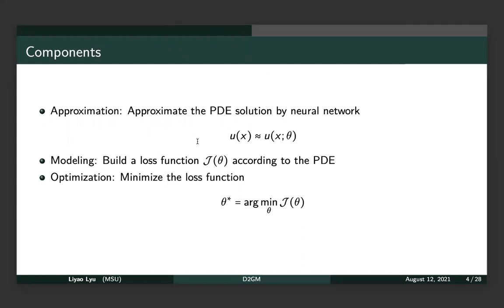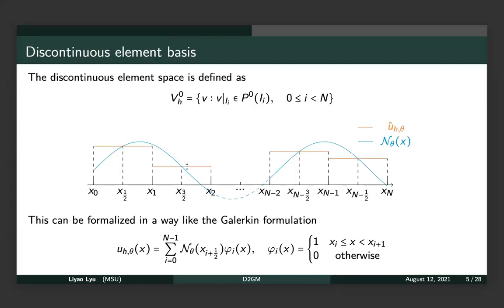We can use different optimizers to find the optimal solution. However, for our problem the solution can have discontinuities, but most activation functions like sigmoid, tanh, and ReLU are continuous. Therefore the neural network will be continuous and will have difficulty approximating a discontinuous function accurately. This motivates us to consider how to model a discontinuous function with a neural network.